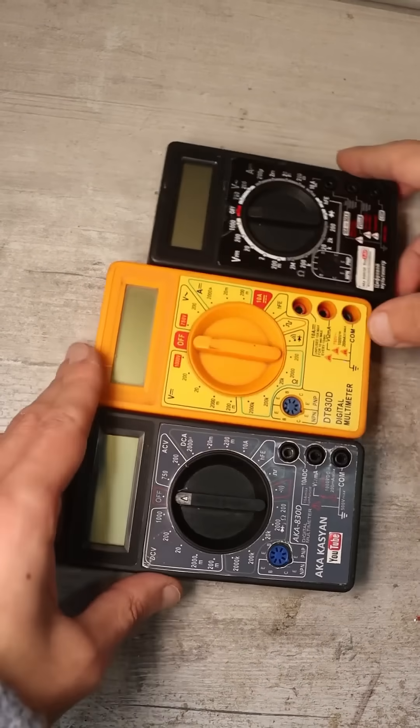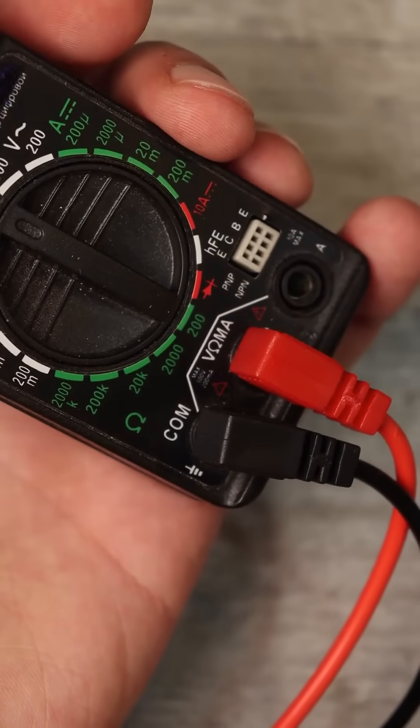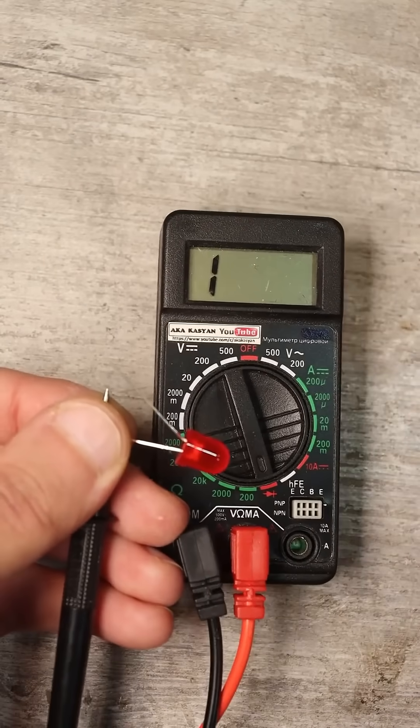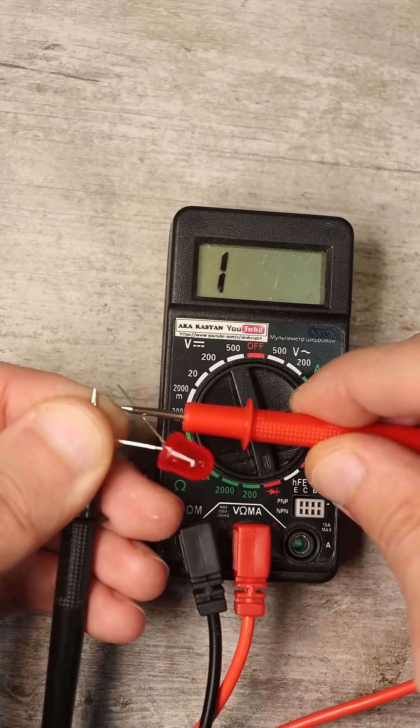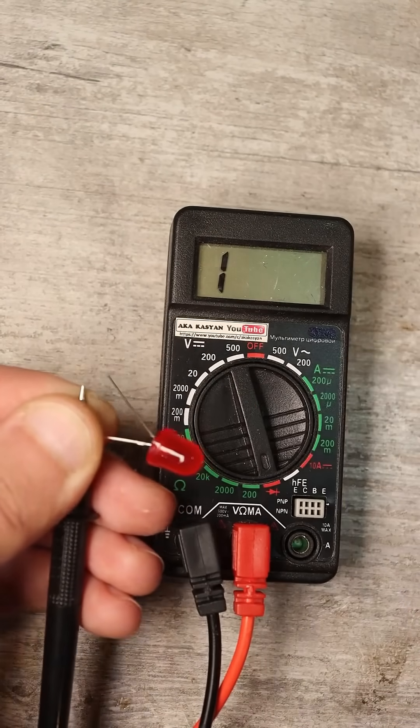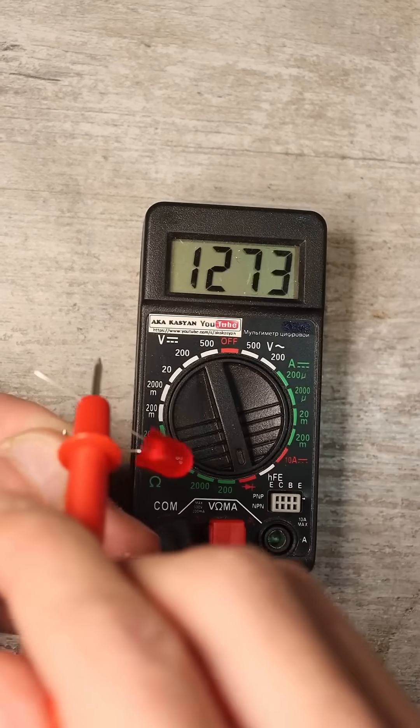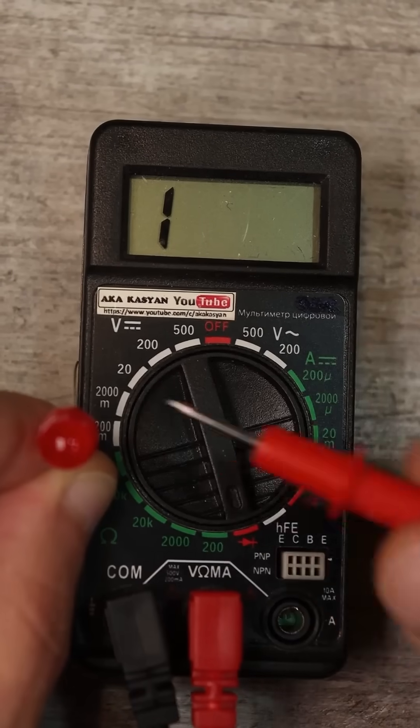Therefore, some multimeters cannot test them. Make sure the multimeter probes are connected correctly. Next, touch the LED leads with the probes. If the LED does not light up and there are no numbers on the display, switch the polarity of the connection and the LED will light up, and you will see the voltage drop across the LED on the display.